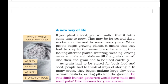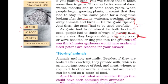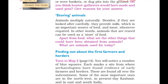Coming to the next topic: A New Way of Life. A seed is used as seed, as food, as a gift, and is also stored. Because humans had seeds, they started a sedentary life where they had to look after plants through watering, weeding, and driving away animals and birds. All this led to the sedentary settlement of humans. They also had to make clay pots to store grain.